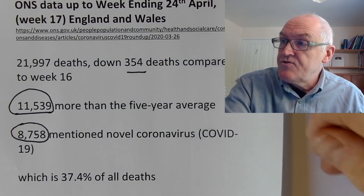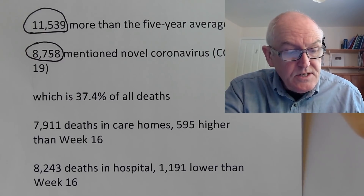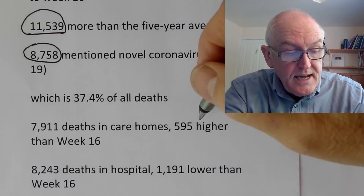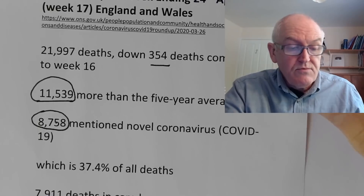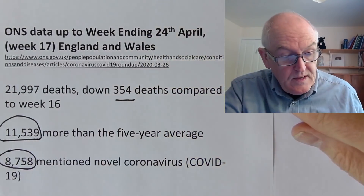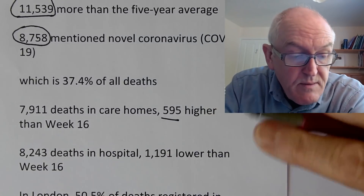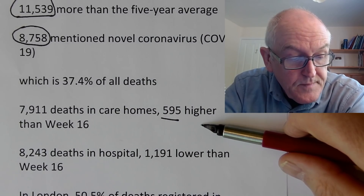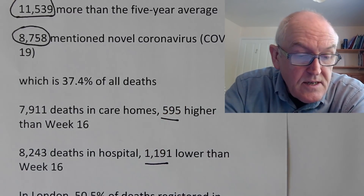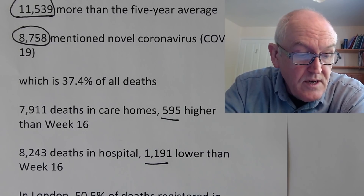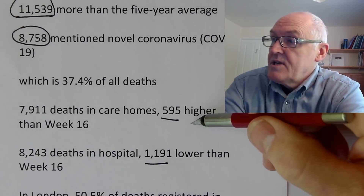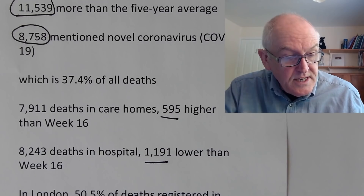37.4% of all deaths are now attributable to COVID-19. There were 7,911 deaths in care homes, and the deaths in care homes have gone up. The total number of deaths in week 17 are down on the week before, and there were 8,243 deaths in hospital — which was lower. So we're seeing overall deaths lower, deaths in hospital from COVID-19 lower, but deaths from COVID-19 in care homes are higher. Care homes are now a major cause of concern.